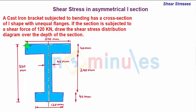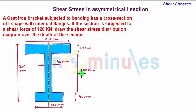The top flange of the eye section is of width 240 mm and depth 40 mm, whereas the bottom flange is of width 120 mm and depth 40 mm. The eye section is symmetrical about a vertical axis but asymmetrical about a horizontal axis. The width of the web is 40 mm and the depth of the web is 240 mm.